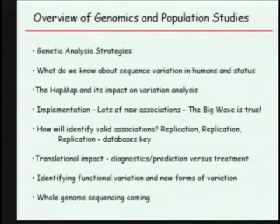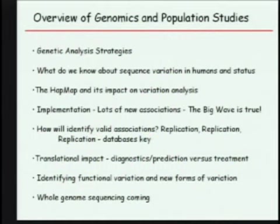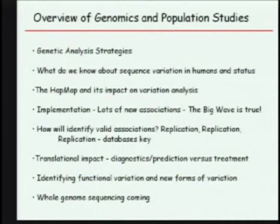I'm going to talk a little about genetic analysis strategies, what we know about sequence variation in humans — because it is somewhat biased — and something about the HapMap and its impact. I also want to talk about translational impact, because we can often make diagnostic predictions about disease susceptibility or phenotypes. But that's different from developing treatments, and the functional data we need for identifying function is not necessarily there and will take time. I'll also touch on whole genome sequencing and what might be available in the near future.